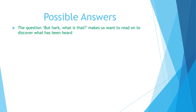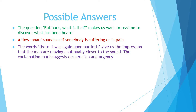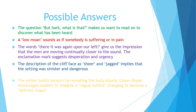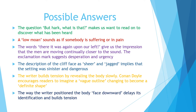Possible answers. The question "But hark, what is that?" makes us want to read on to discover what has been heard. "A low moan" sounds as if somebody is suffering or in pain. The words "there it was again, upon our left" give us the impression that the men are moving continually closer to the sound. The exclamation mark suggests desperation and urgency. The description of the cliff face as "sheer" and "jagged" implies that the setting was sinister and dangerous. The writer builds tension by revealing the body slowly — Conan Doyle encourages readers to imagine a vague outline changing to become a definite shape. The way the writer positioned the body face downward delays its identification and builds tension.